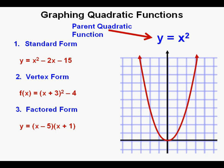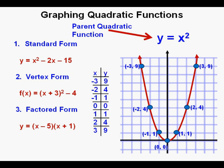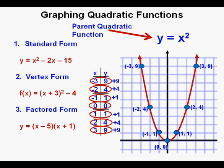Here is a graph of the quadratic parent function, y or f of x equals x squared. Here are the coordinates next to the points. The parent quadratic function has distinctive spacing and symmetry that we can use to graph other quadratic functions. Starting from the origin and the vertex of the parabola at (0, 0), the points immediately to the left and right are one unit above. The next two points two units to the left or right are four units above the origin. And the points three to the left and right are nine units higher.